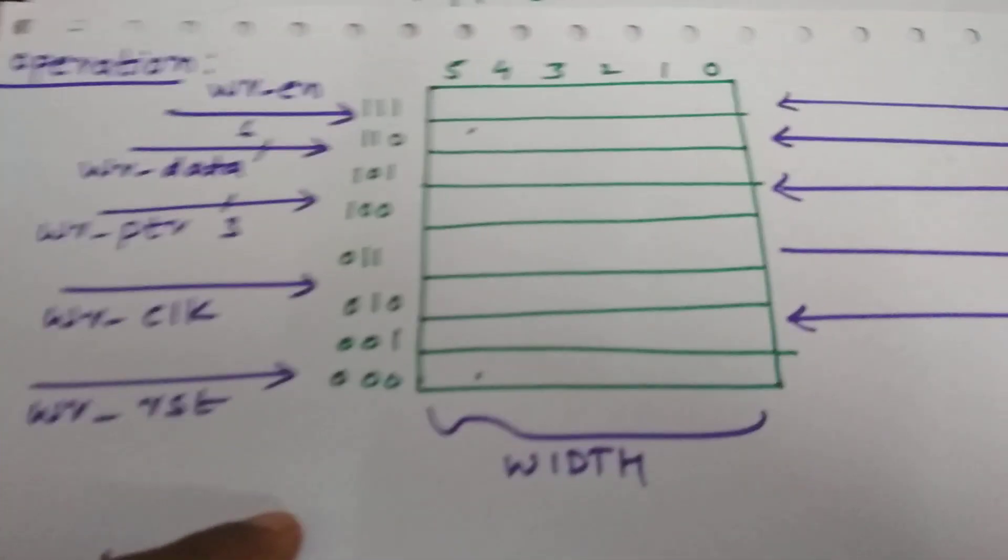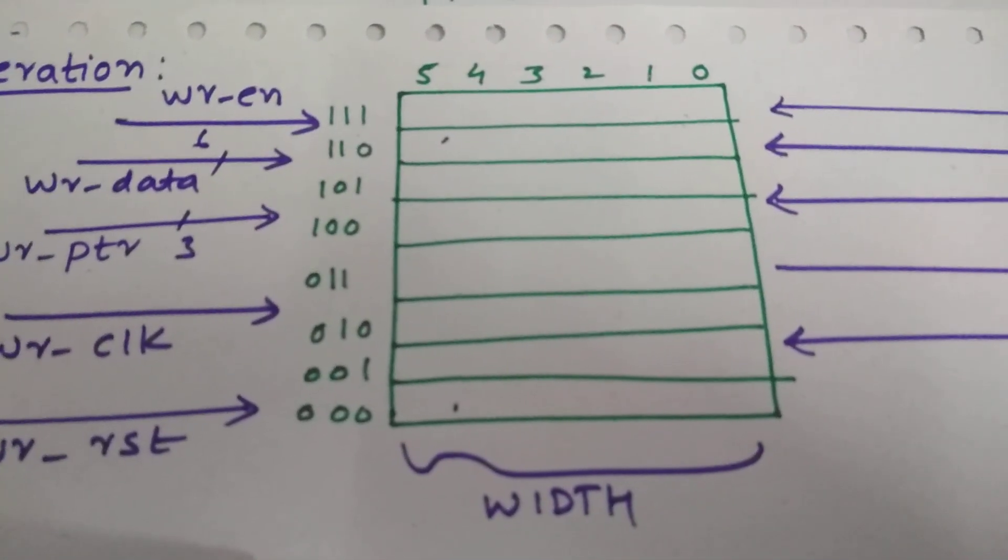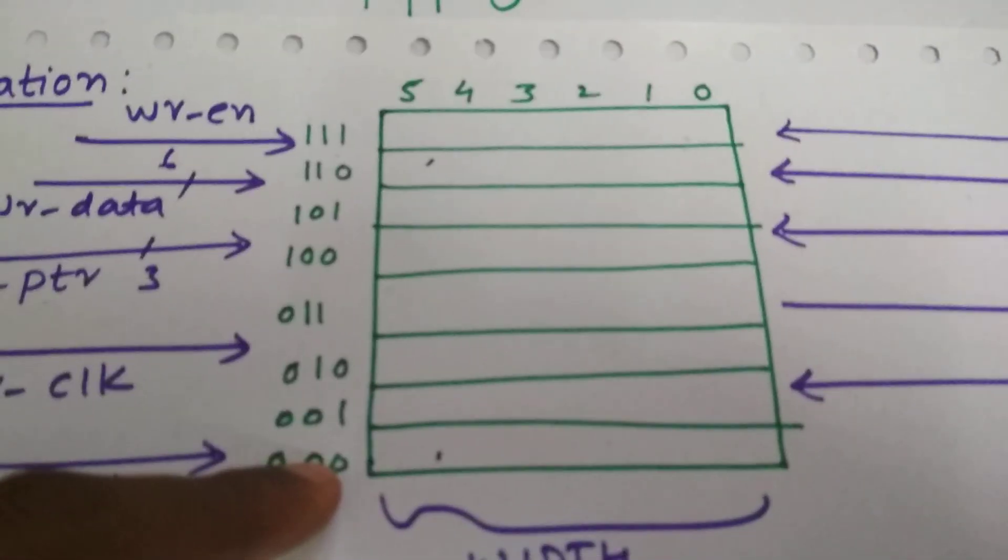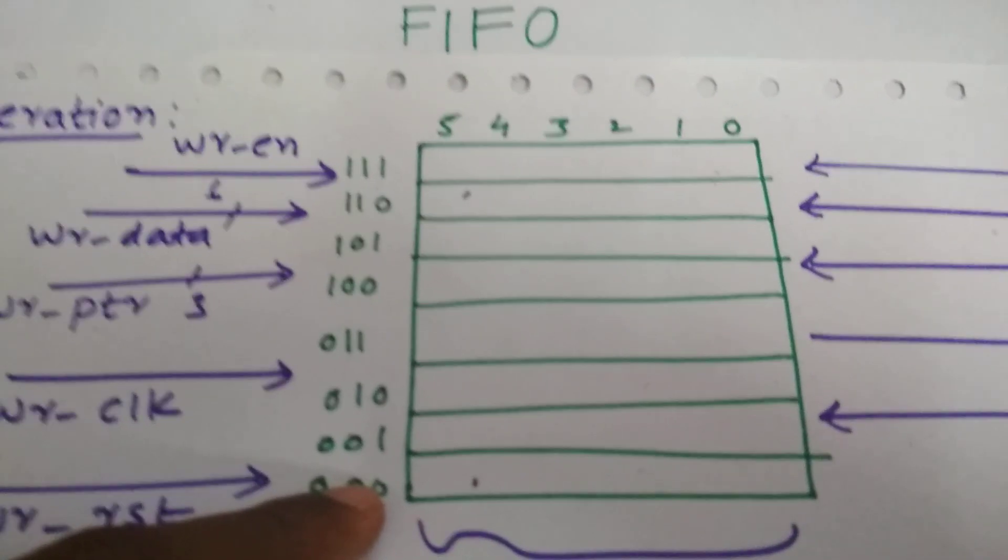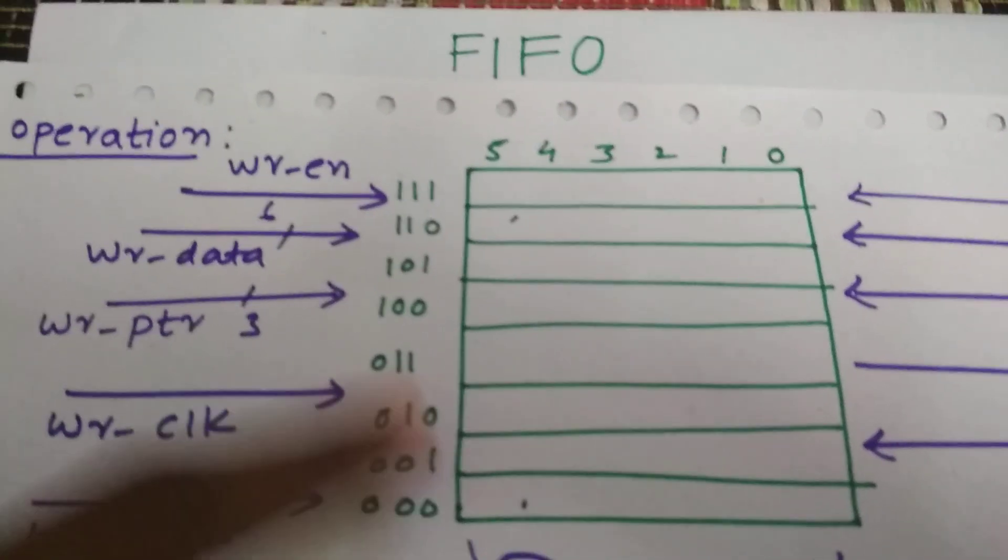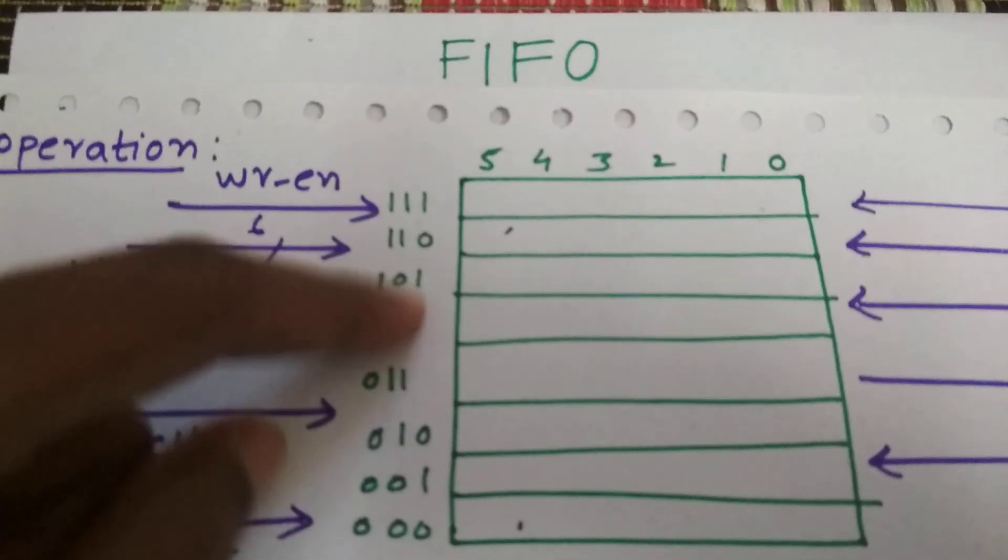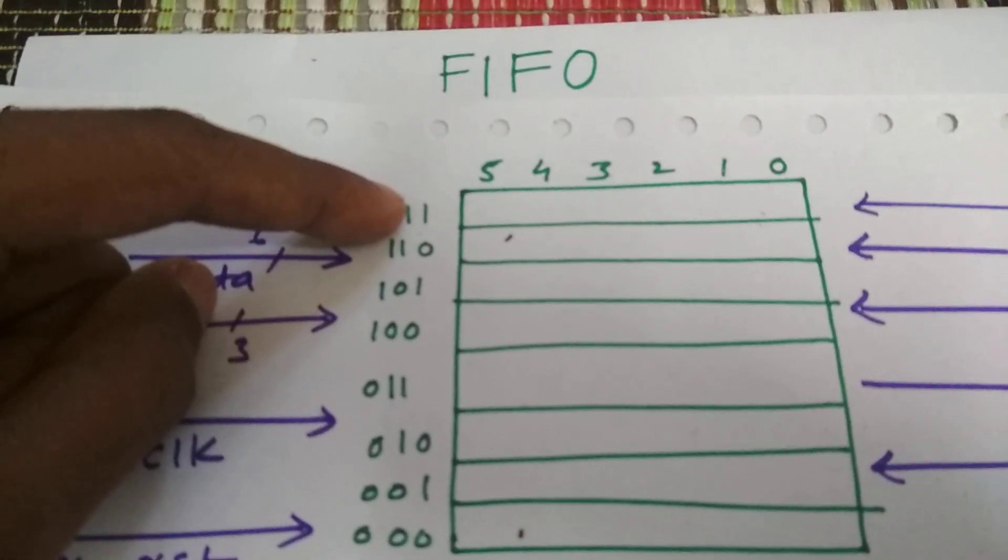So whenever we start writing, what happens? First it will be 0, then write enable is high, then after we'll start writing the data, the write pointer will increment up to 111, it goes till 7.